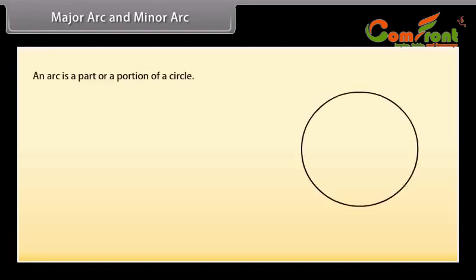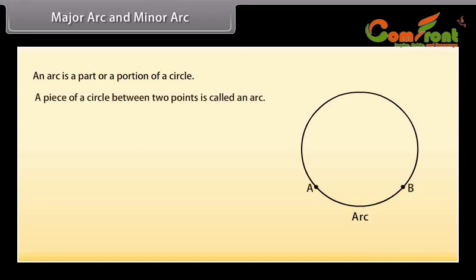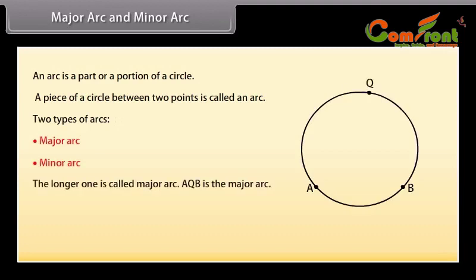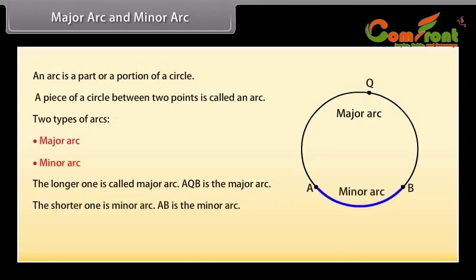Major arc and minor arc. Look at this figure — this is an arc. An arc is a part or portion of a circle, or we can say that a piece of a circle between two points is called an arc. There are two types of arcs: the major arc and the minor arc. The longer one is called the major arc — here AQB is the major arc. The shorter one is the minor arc — AB is the minor arc. The arc is denoted by a special sign.